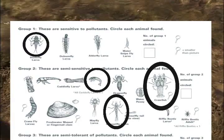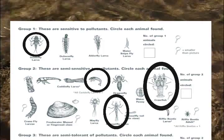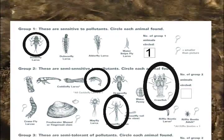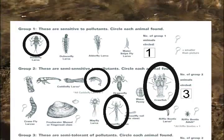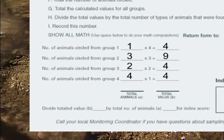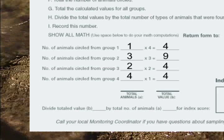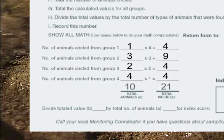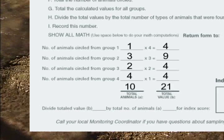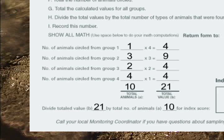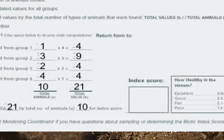Once you've sorted and identified all your macroinvertebrates, the last step to calculate your biotic index is to count the number of types of organisms circled in each group and write that number in the box provided. Enter each box number in the workspace for each group on the back of your recording form. Multiply the entered number from each group by the group value for each of the groups. Total the number of macroinvertebrate types circled, then total the calculated values for all groups. Divide the total values by the total number of types of organisms found — this is your biotic index score.